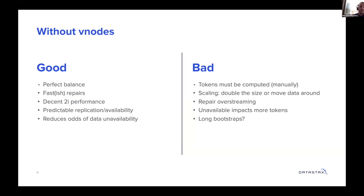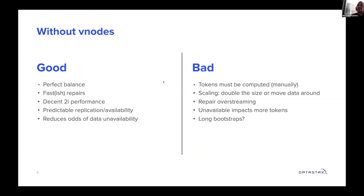Scaling is tough, so you either have to double the size of the cluster each time you want to add nodes, or you'll need to move all data around to rebalance the cluster. When it comes to repair, you have a lot of over-streaming because you will have one repair session per node, per token range, creating an effect called over-streaming where you repair tokens that didn't need to be repaired, due to the Merkle tree resolution. You have more unavailability in tokens when you have nodes down, that'll impact more data in the cluster. And bootstraps were said to take longer because they involve only RF-1 nodes in the cluster.